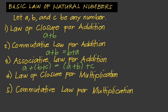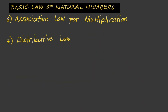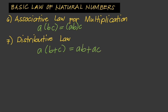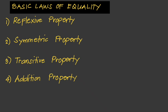The next one is the law of closure for multiplication, where A times B is also a natural number. Then the associative law for multiplication: A times (B times C) equals (A times B) times C. And we have the distributive law: A times (B plus C) equals AB plus AC.